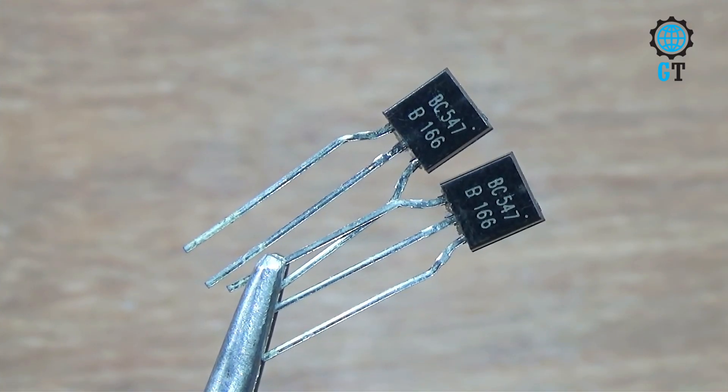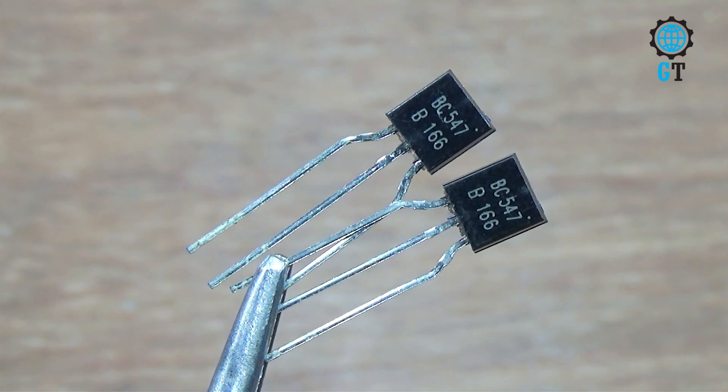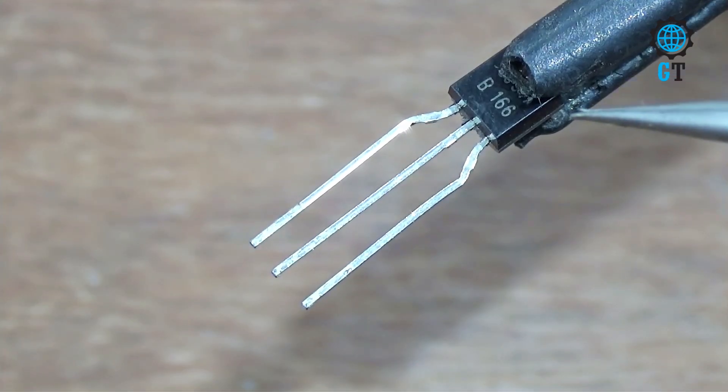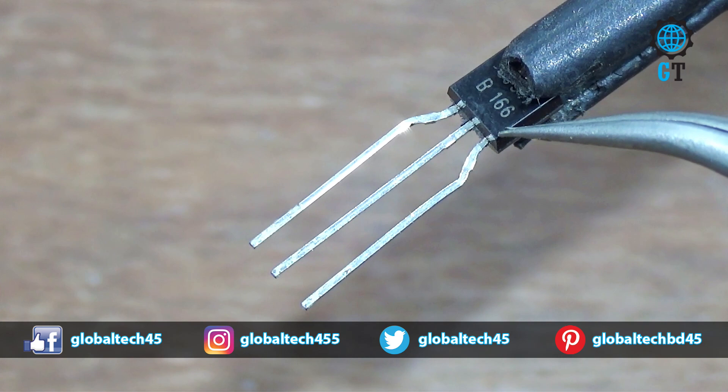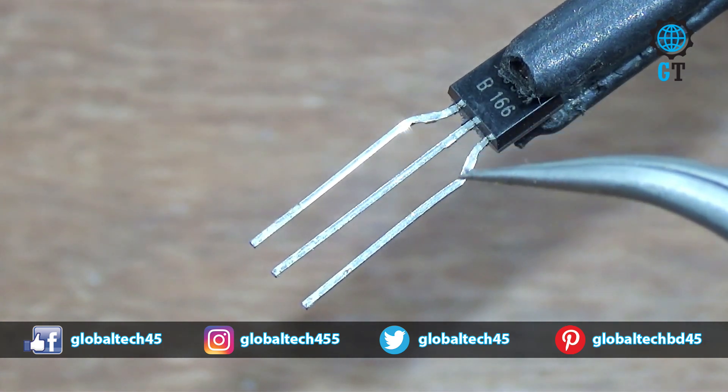To make this circuit, first we need two piece transistor. Its value BC547, it is an NPN transistor. It has three terminals. These three terminals have different names: one number collector, two number base, and three number emitter.